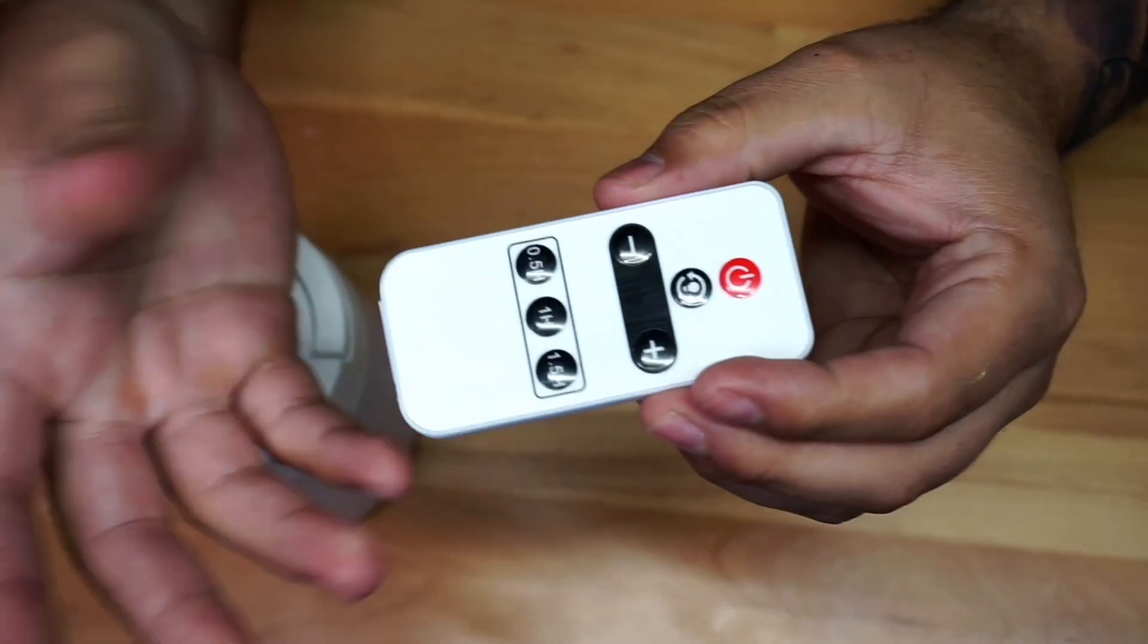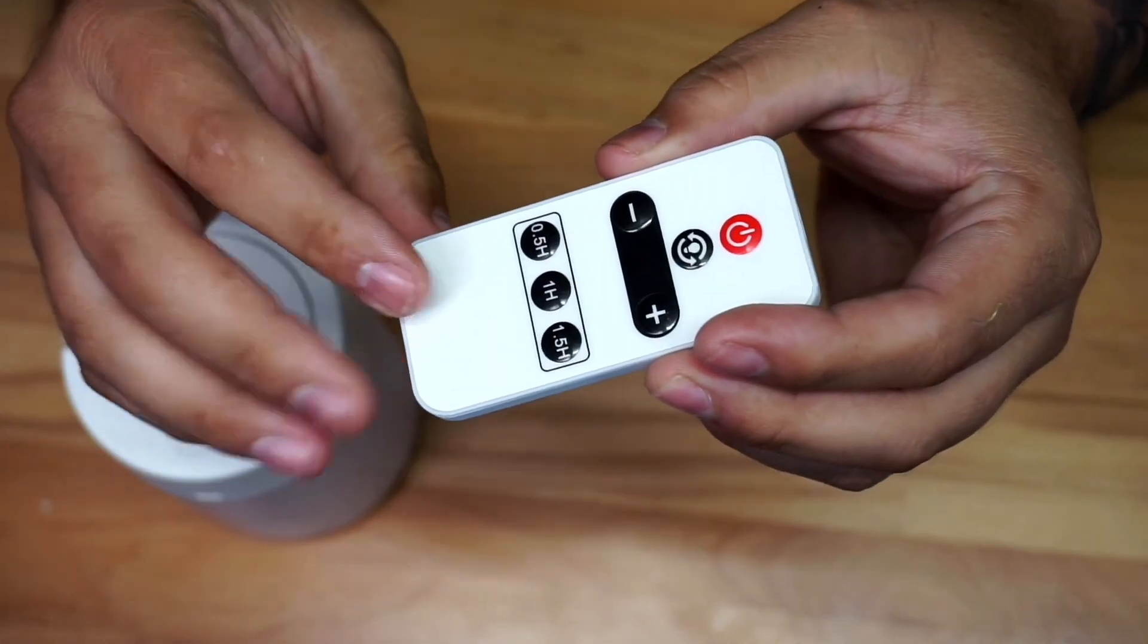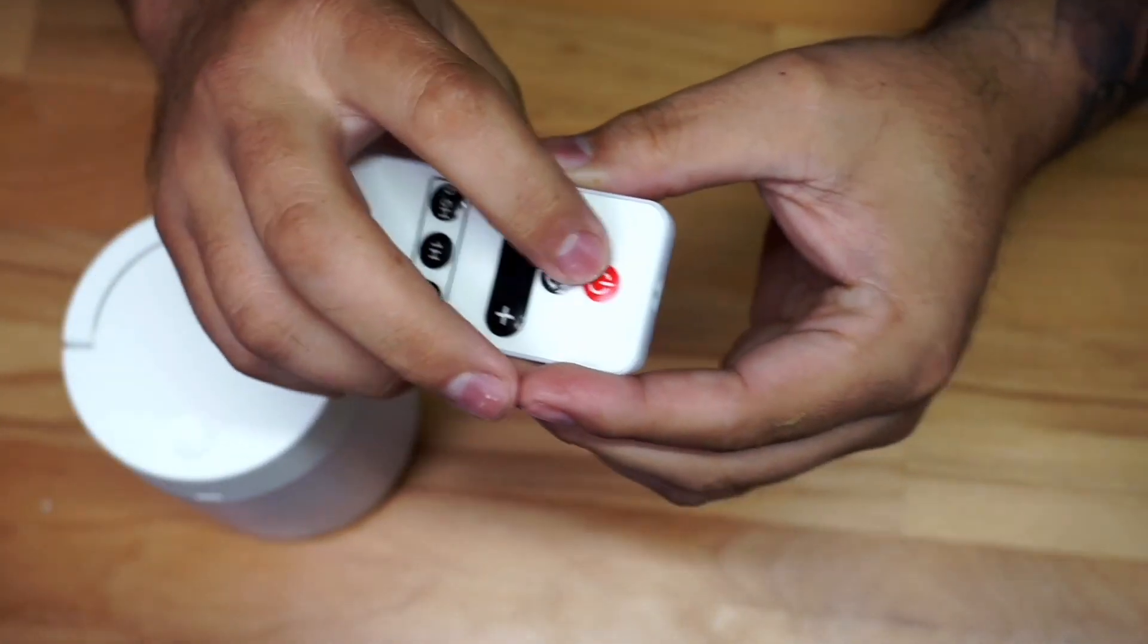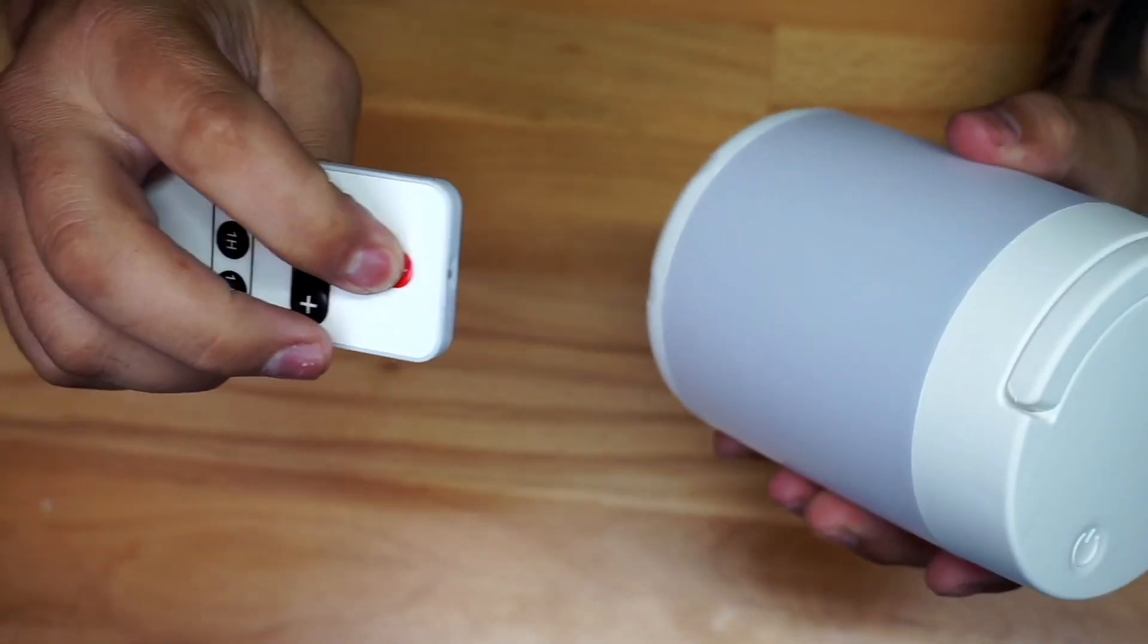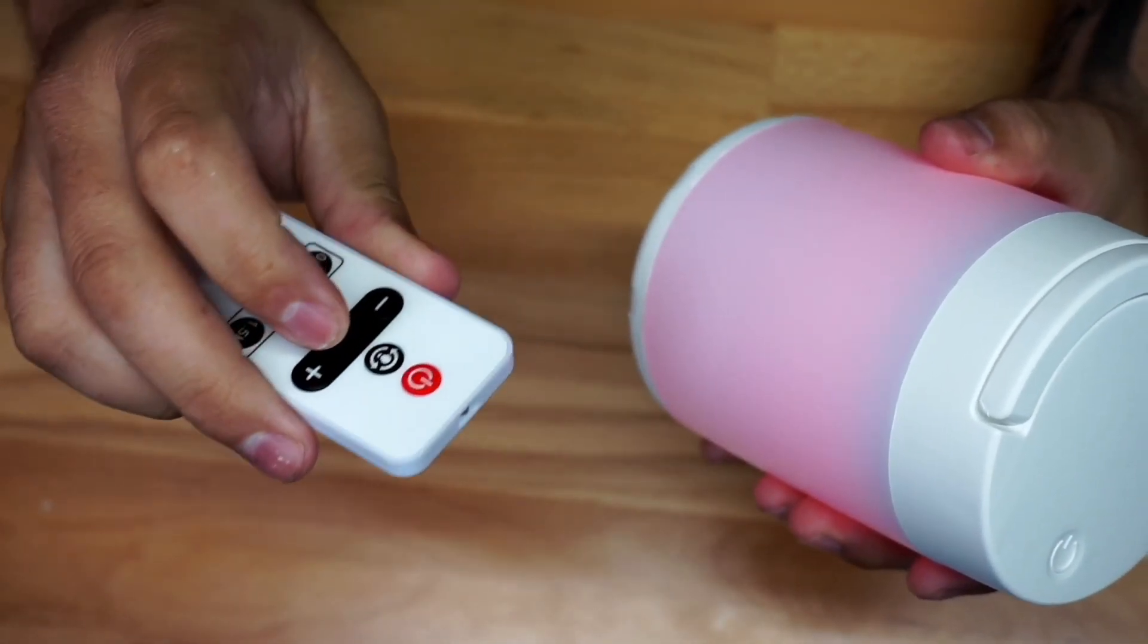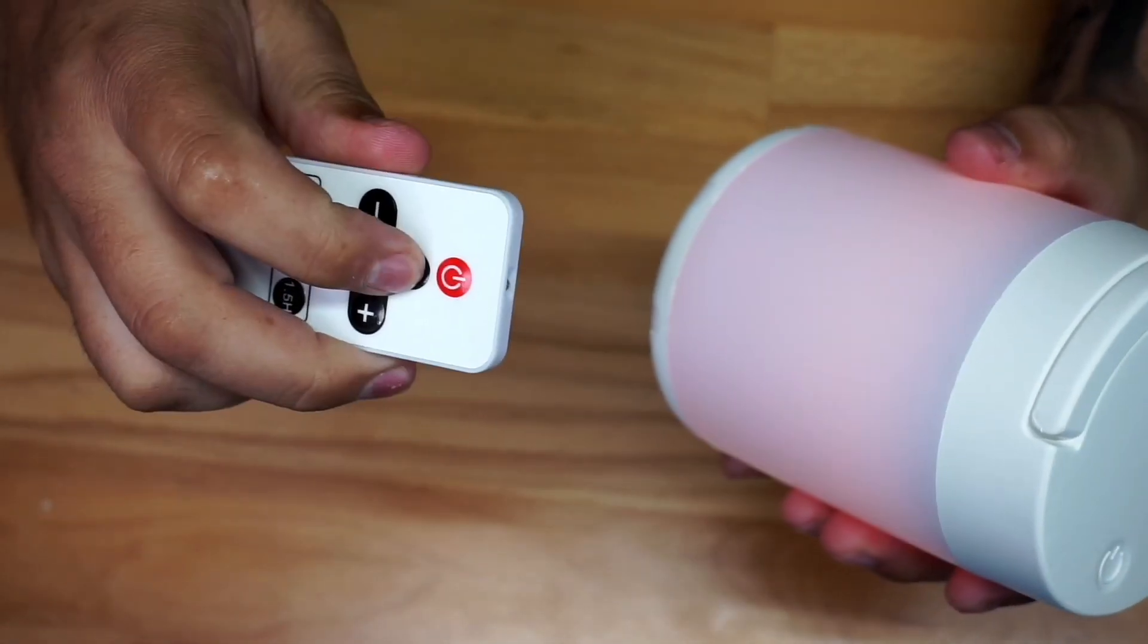And then we got the controller right here. Everything is already in there so you don't have to get batteries or anything, it's ready to go. You have your on and off, which if I press right here you can see you have your on and off. Then you can switch this button right here, you can switch through different colors.